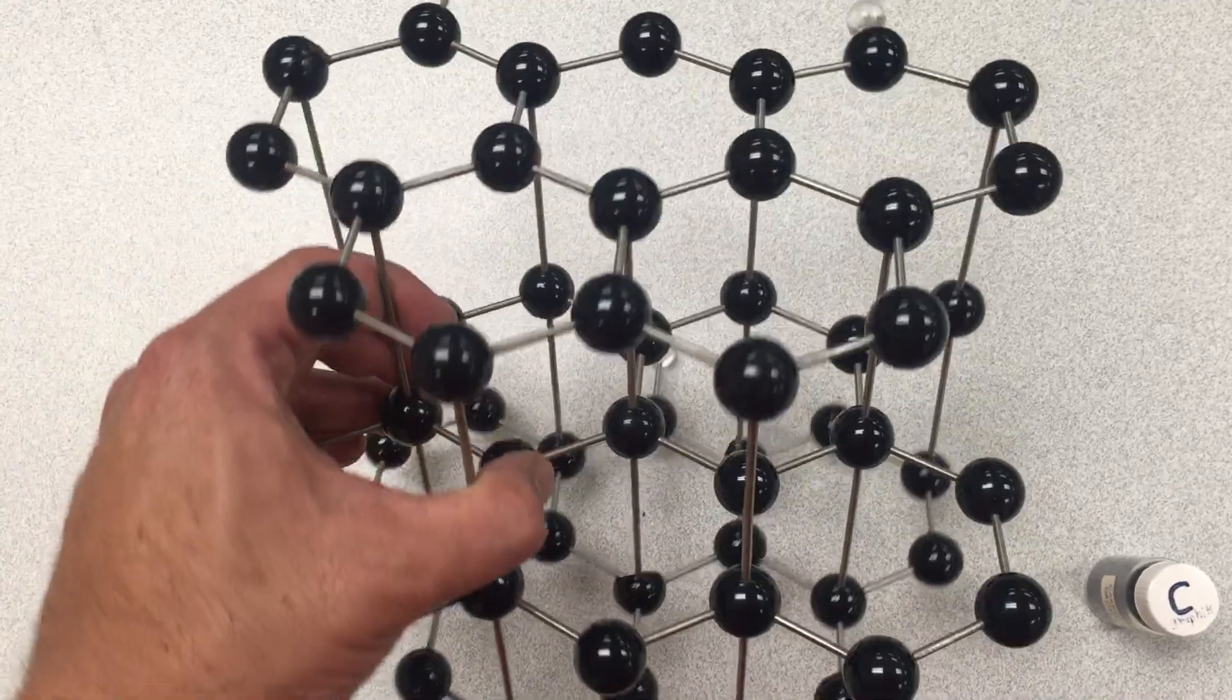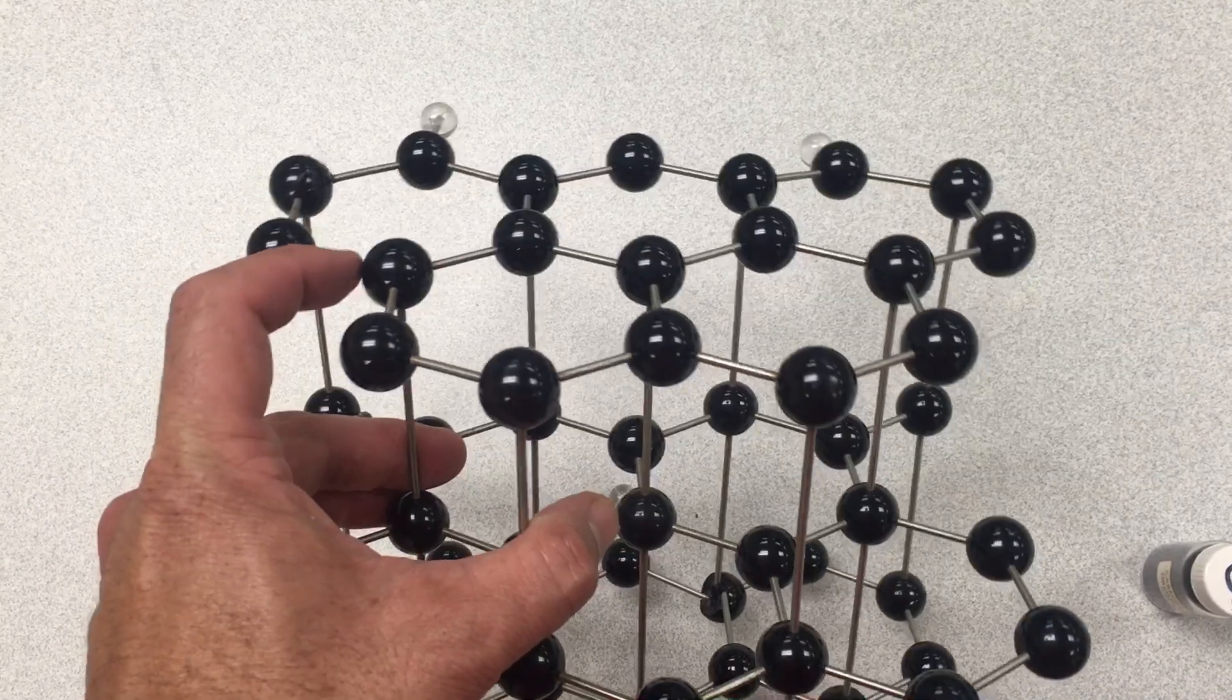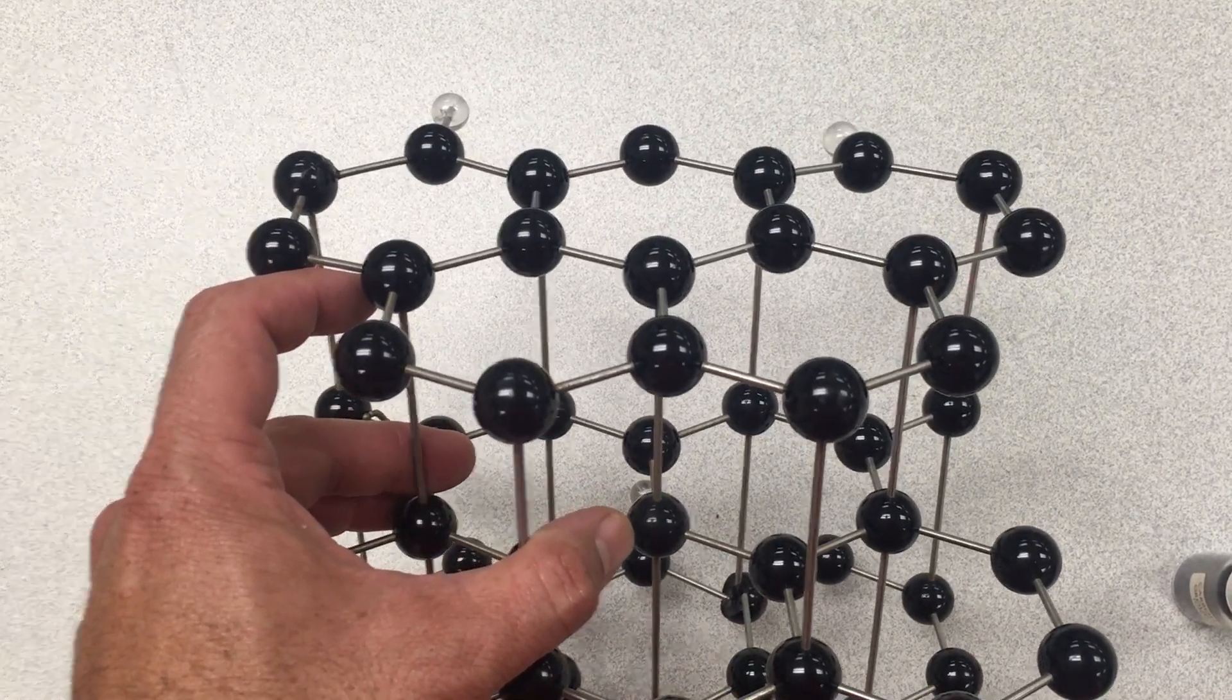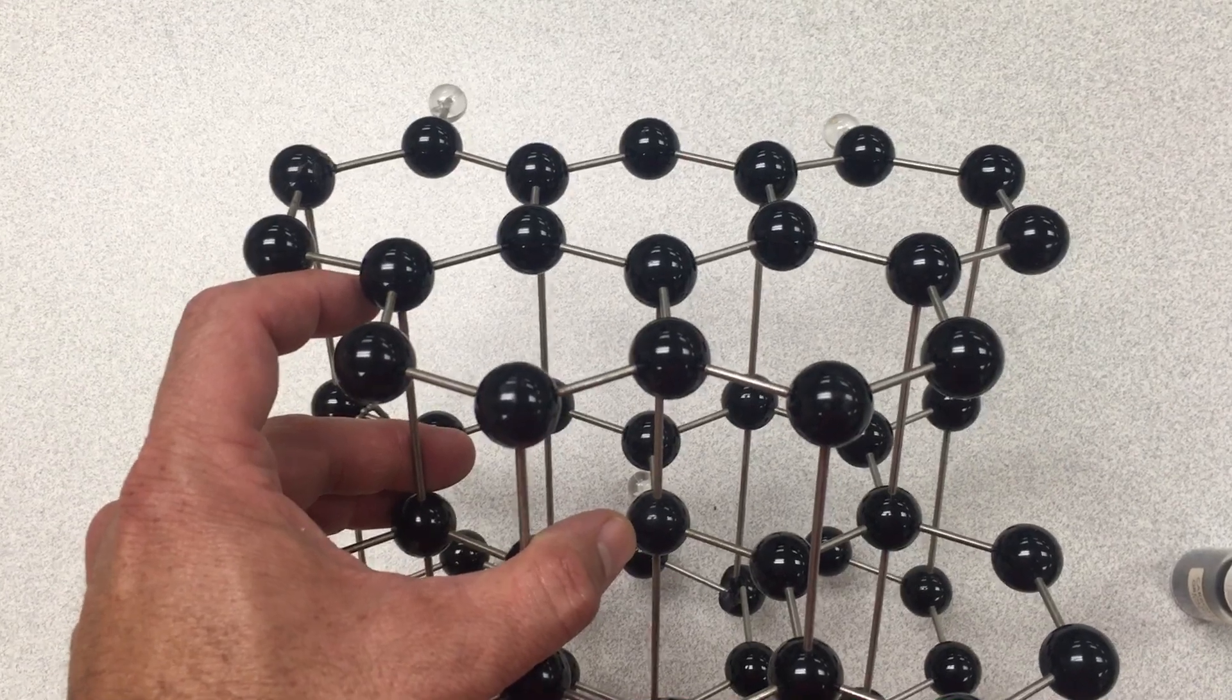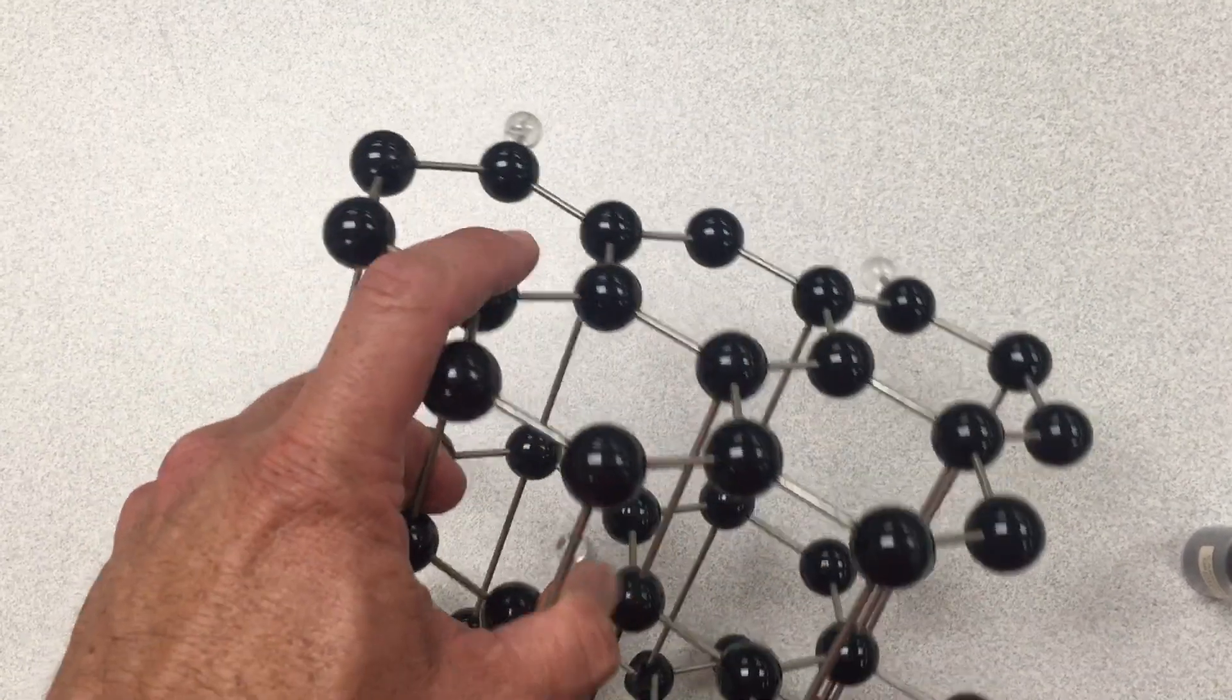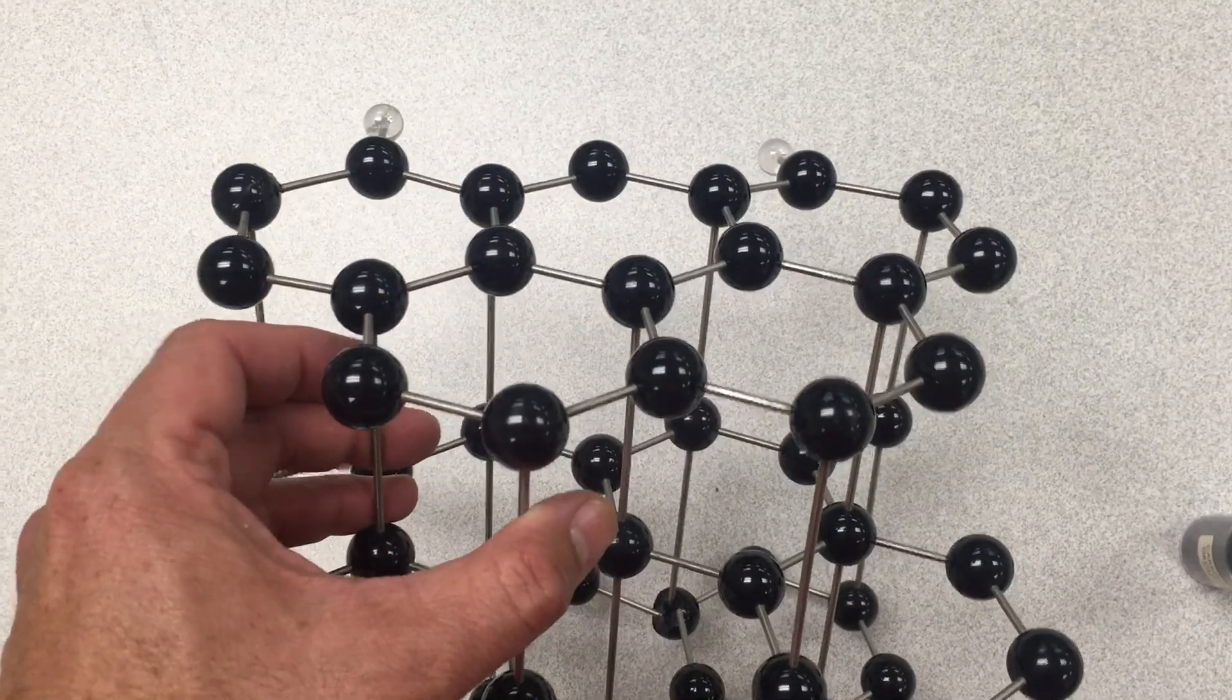What we have here is in each layer we have sp2 hybridization. And the carbons are bonded in a trigonal planar geometry to other carbons. And these hexagon rings that are all fused together in each of these sheets.